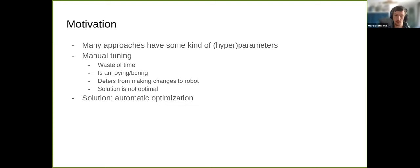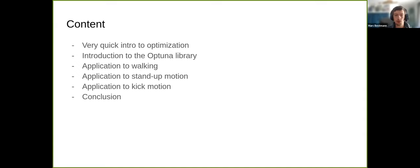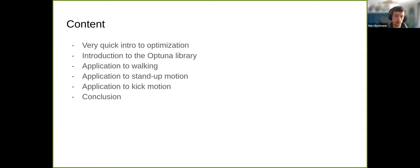The solution is to have some kind of automatic optimization approach, and that's what I want to talk about today. We'll start with a quick high-level introduction to optimization, then introduce the Optuna library we use, and then cover three application scenarios: walking, standing-up motions, and kicks — the three big motions all RoboCup humanoid league teams need to solve.